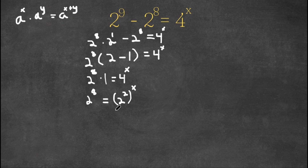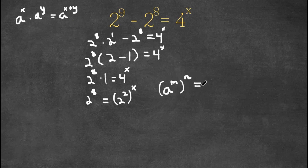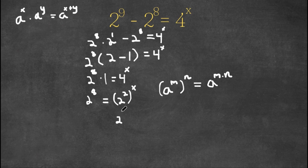Now, an important property of exponents is that if we have a to the power of m to the power of n, this is equal to a to the power of m times n. So 2 to the power of 2 to the power of x is equal to 2 to the power of 2 times x, which is the same thing as 2x. And this is still equal to 2 to the power of 8.